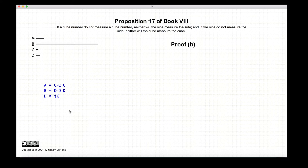The second part of the proof: again two cube numbers, and now we're starting with the condition that C does not measure D. That's our initial condition and again we're proving it by contradiction.